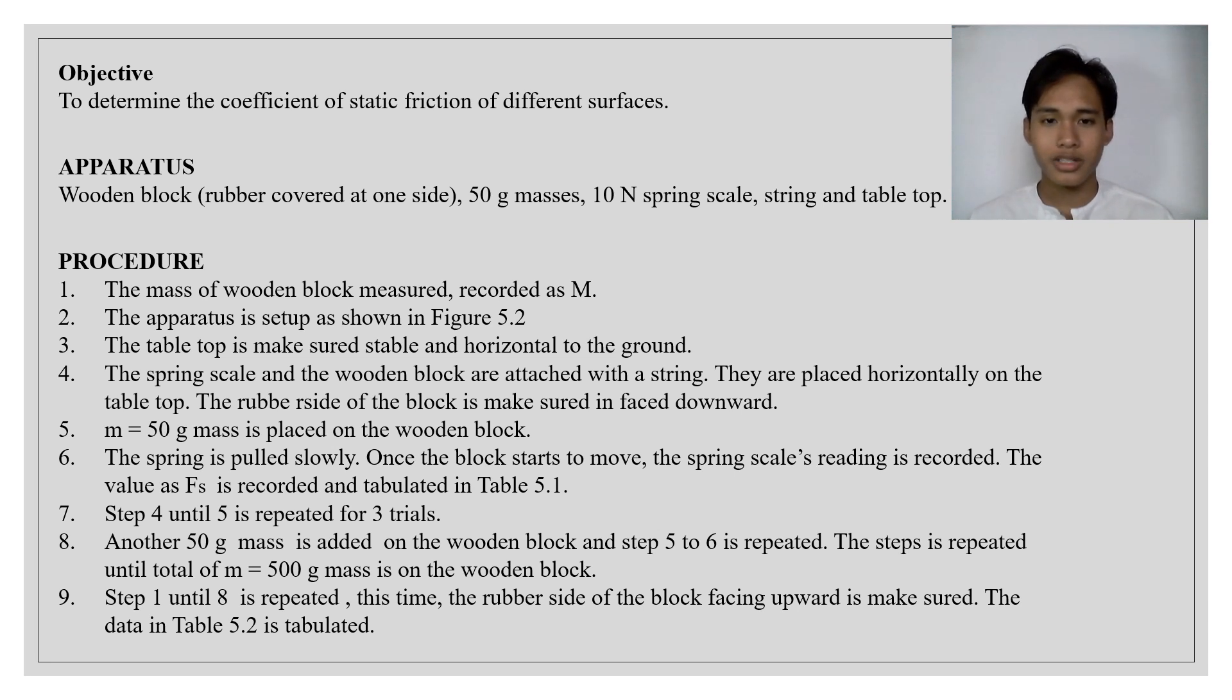The third, the tabletop was ensured stable and horizontal to the ground. And the fourth is the spring scale and the wooden block were attached with a string and they were placed horizontally on the table. The rubber side of the block also was ensured to face downward. And the fifth is M equal to 50 grams mass was placed on the wooden block.